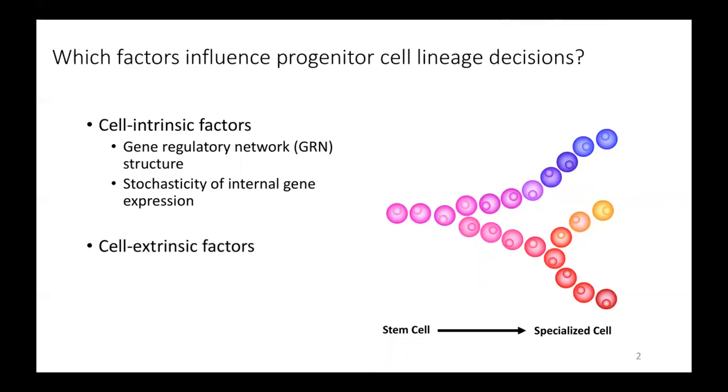We also have cell extrinsic factors, and this includes things like the environmental conditions of the cell and cell-cell signaling. In particular, in this talk, we're going to focus on how cell-cell signaling influences stem cell lineage decision making.